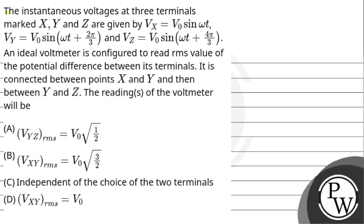Hello Bacho, let us read the question. The instantaneous voltages at three terminals marked X, Y and Z are given by Vx = V₀ sin(ωt), Vy = V₀ sin(ωt + 2π/3), and Vz = V₀ sin(ωt + 4π/3). An ideal voltmeter is configured to read the RMS value of the potential difference between its terminals. It is connected between points X and Y and then between Y and Z.